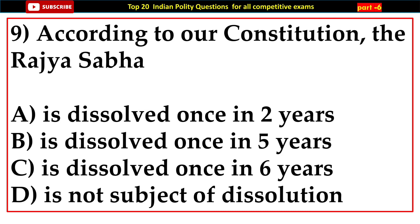Question number nine: According to our Constitution, the Rajya Sabha — options: A) Is dissolved once in two years, B) Is dissolved once in five years, C) Is dissolved once in six years, D) Is not subject to dissolution. Answer: D) Is not subject to dissolution.